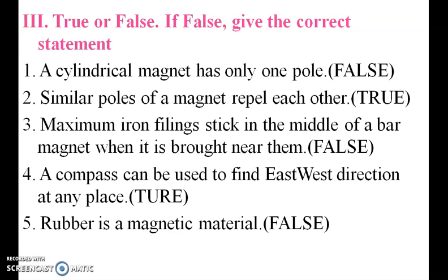Iron filings go to the poles, not the middle. A compass can be used to find the east-west direction at any place — that is correct, because it freely points direction. Rubber is a magnetic material — that is false.